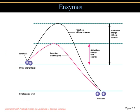An illustration from the textbook shows the importance of enzymes. Without an enzyme, a high level of activation energy is required for a reaction to take place. But if you add an enzyme — a substance that helps facilitate the reaction — it brings the activation energy level down significantly. Enzymes help decrease the threshold of energy required and facilitate reactions without themselves being used up in the process.